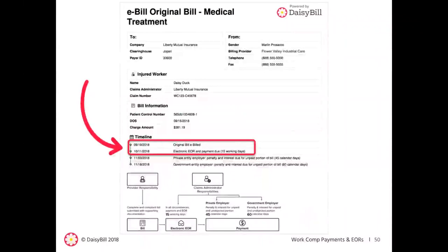In DAISY bill, every electronic bill includes a cover sheet alerting the claims administrator of the date that the electronic EOR is due back. In this example, the first date shown — September 19, 2018 — is when the original e-bill was transmitted and received. The second date — October 11, 2018 — is the date the electronic EOR is due. In DAISY bill, the bill history shows these same compliance due dates.